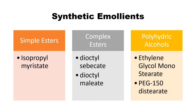Synthetic emollients are synthesized in the lab. They are esters produced from the combination of alcohols and acids, and are classified into three categories depending on their complexity. First are simple esters — simple combinations of acid and alcohol — which produce isopropyl myristate. Second are complex esters, where the acidic and alcoholic chains are enlarged, producing emollients like dioctyl sebacate or dioctyl maleate.